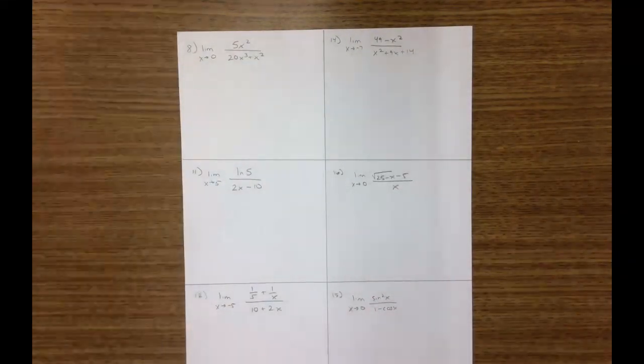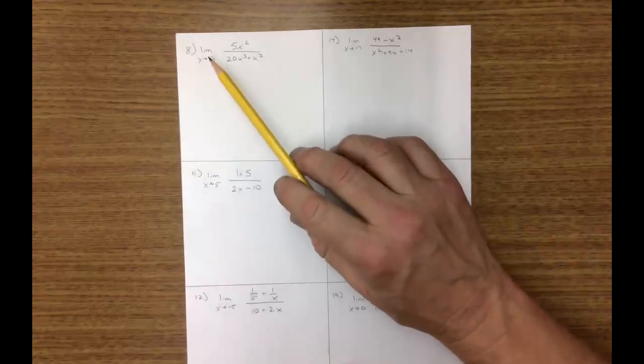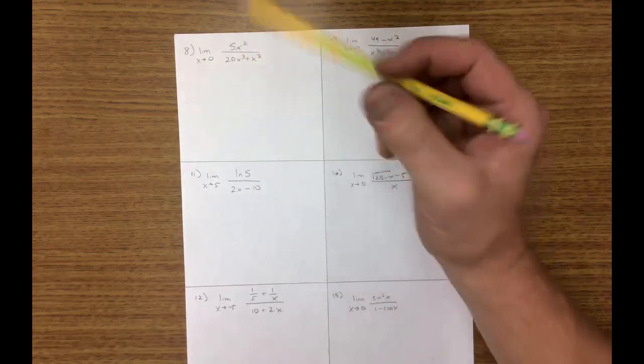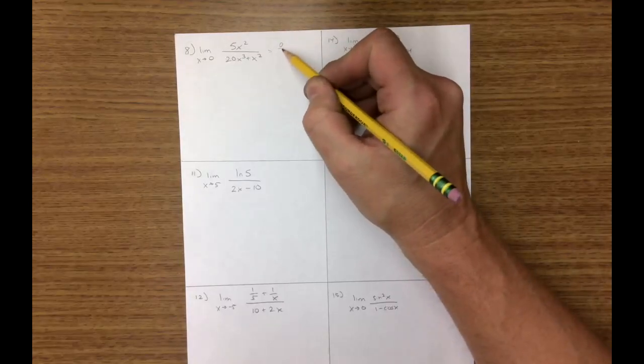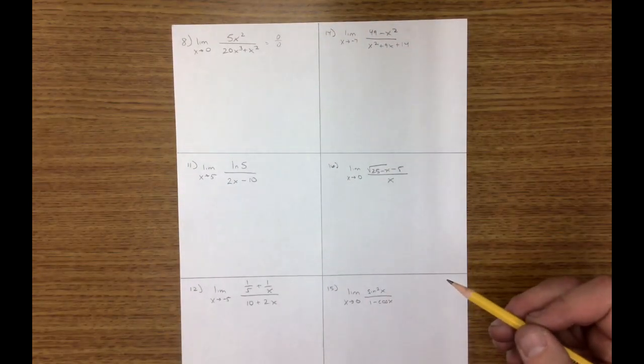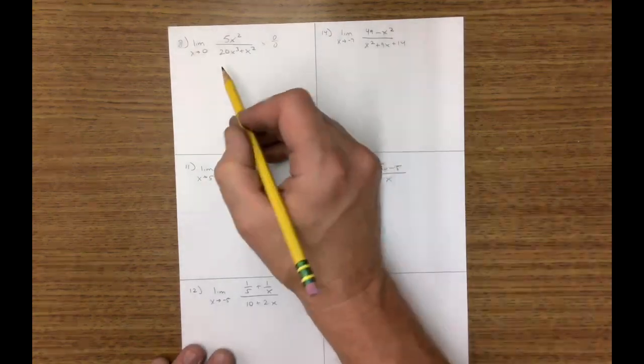Number eight, find a limit as x goes to zero. Well, if I plug in x, it's very clear I have zero over zero, so I have to do some algebraic manipulation to make this work. And what I'm going to do is I'm going to factor this.